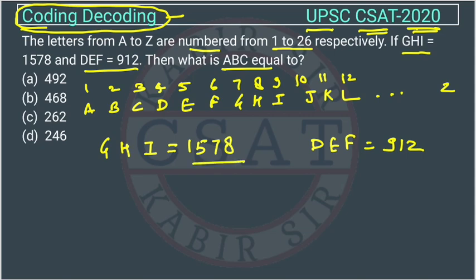GHI is coded as 1578. We will see what logic is used. We know the position of G is 7, H is numbered as 8, and I is numbered as 9.